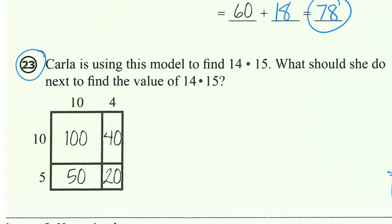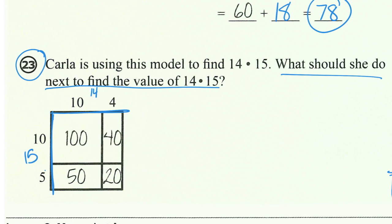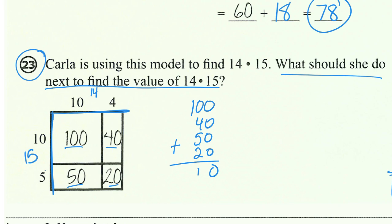Carla in number 23 is using this model to find 14 times 15. The distance of 10 plus 4 is 14, and this distance over here is 15. The question is asking what should she do next to find the value of 14 times 15. Well, she's already found all of the areas in here, so the last thing she needs to do is add them up. So 100 plus 40 plus 50 plus 20. This addition doesn't end up being too bad — 4 plus 5 plus 2 is 11 — and my final answer is 210.